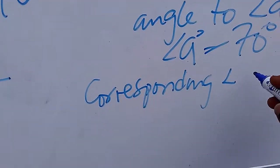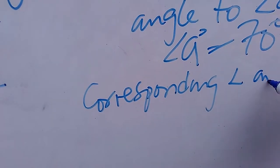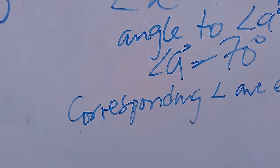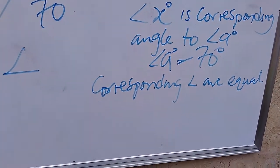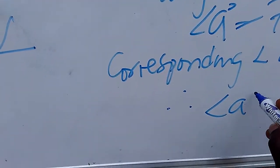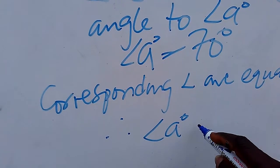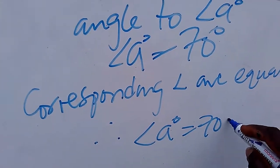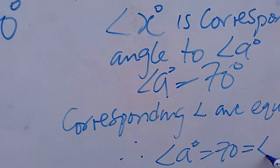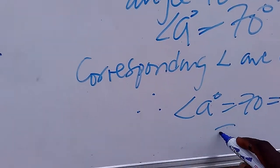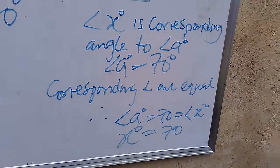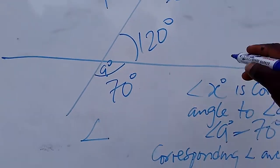Corresponding angles are equal — that is our sixth theorem. Therefore, angle A is equal to 70 degrees, which is equal to angle X, which is equal to 70 degrees. So angle X is 70 degrees.